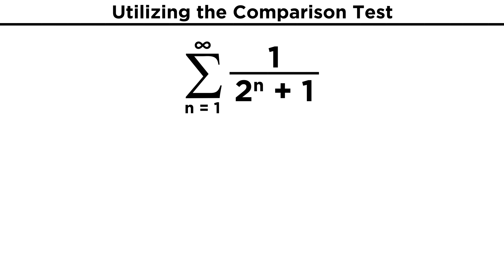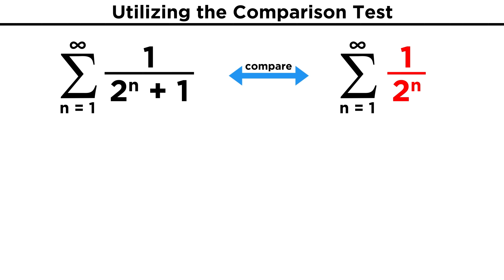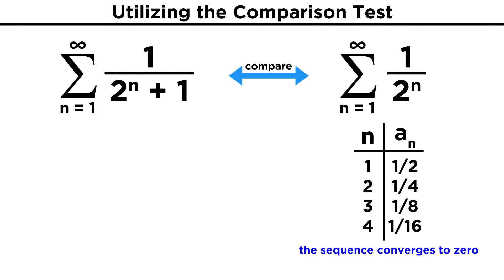For example, say we are looking at the series one over the quantity two to the n plus one, from one to infinity. This looks like it could be tricky to assess, but what if we compare it to a simpler series, one over two to the n. This is a simple geometric series, and as we have already seen, the fraction gets smaller and smaller as the exponent gets larger and larger. So the sequence converges to zero, and as we saw in the previous tutorial, this is indeed a convergent series with a sum that is equal to one.